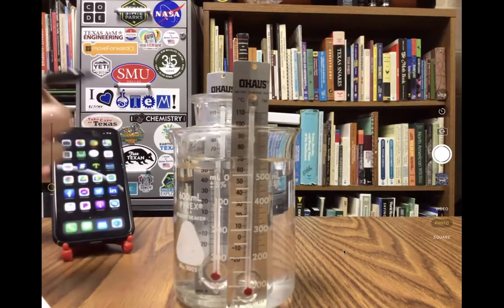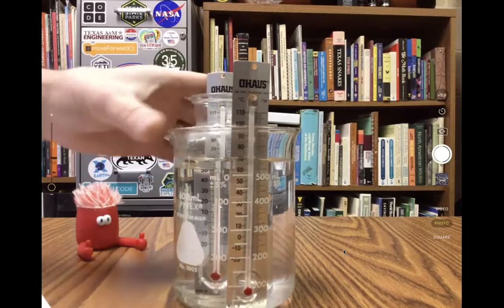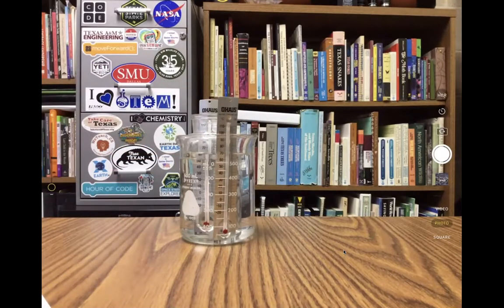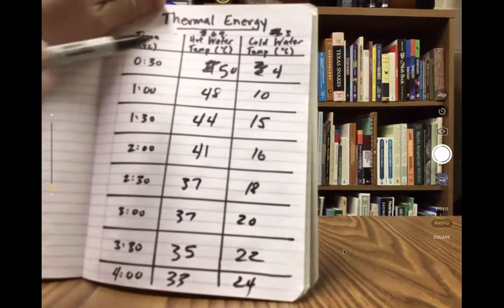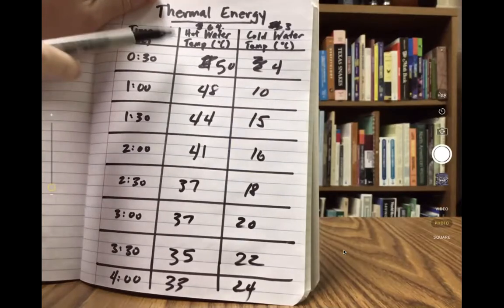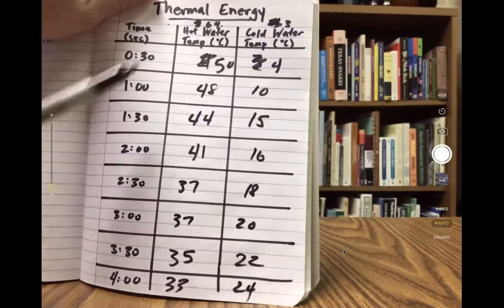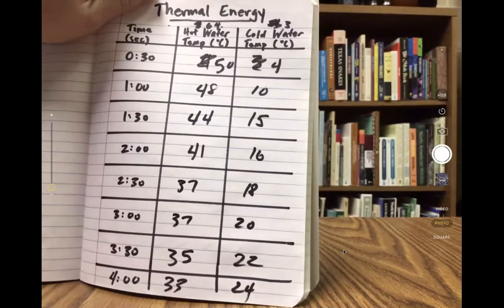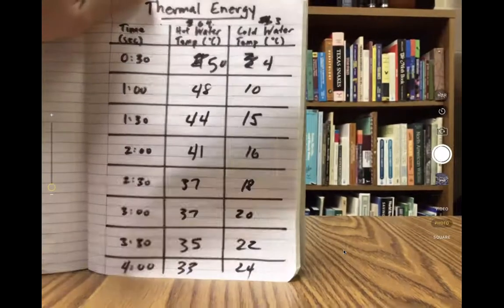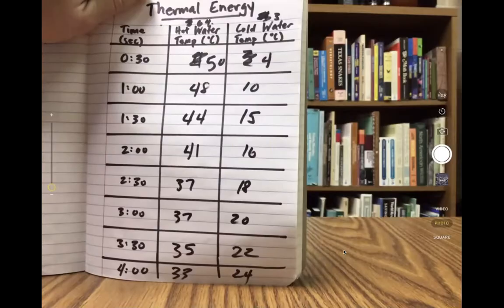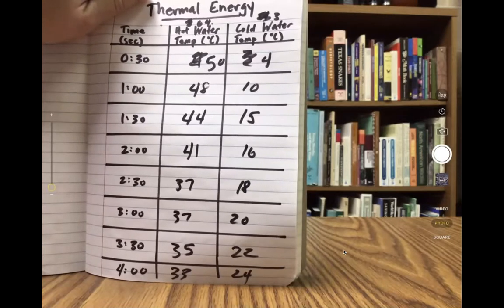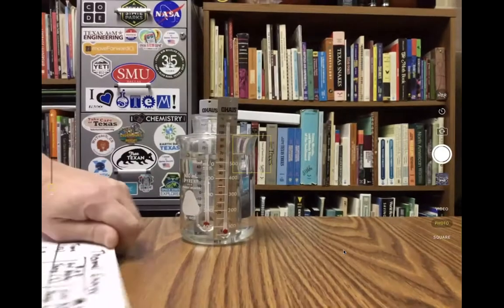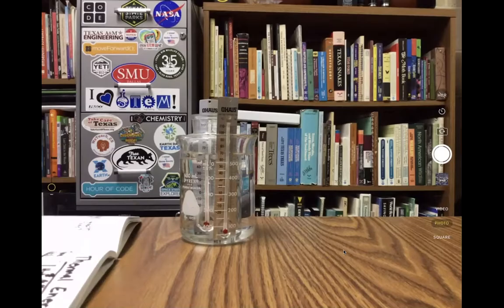Here's my completed table. The hot water started at 64 degrees and steadily decreased in temperature. The cold water started at 3 degrees and gradually increased in temperature because the thermal energy was moving from hot to cold. You've seen this — if you get a drink at McDonald's or any restaurant and they bring you a drink with ice, and you don't drink it fast enough, that ice will melt because heat from the room is moving into your drink.